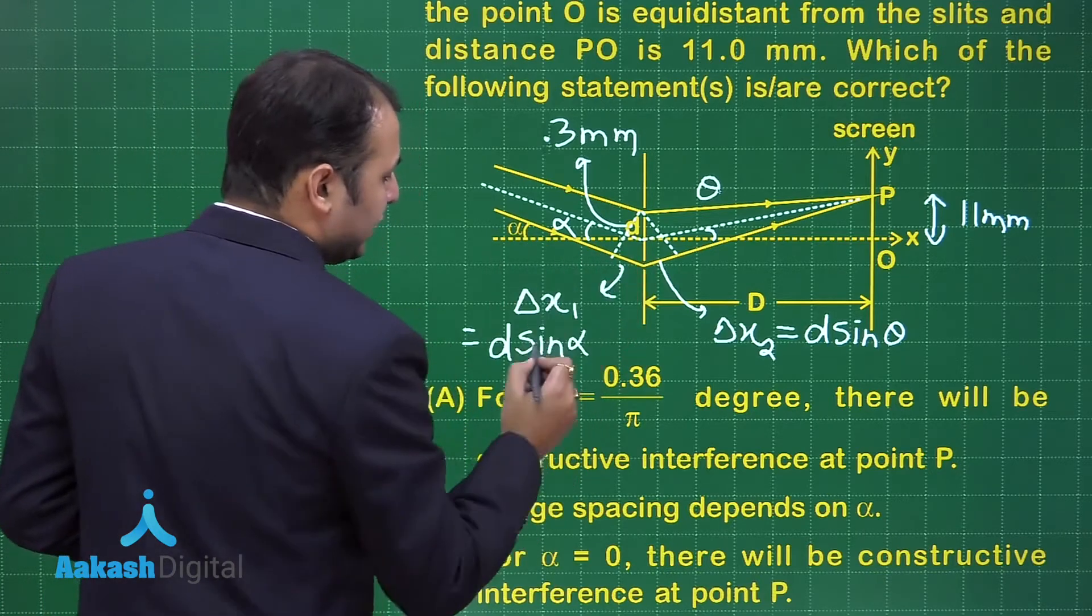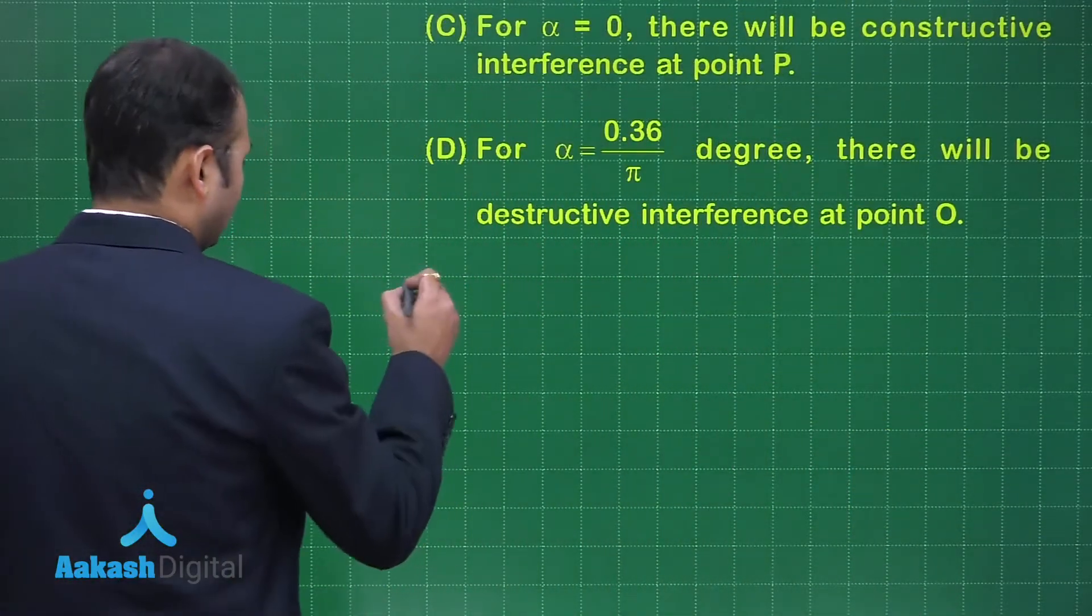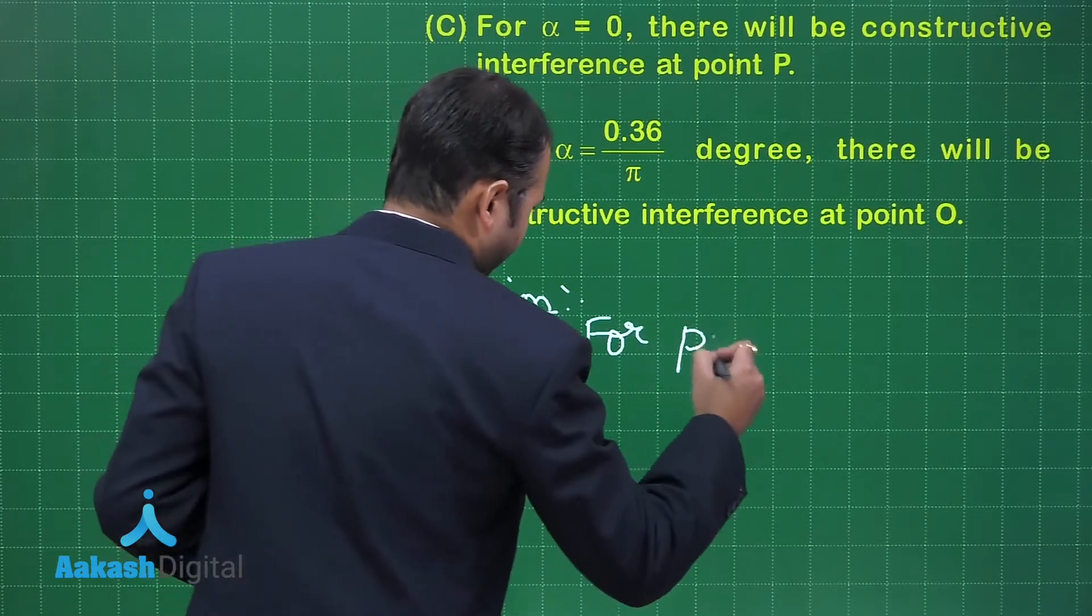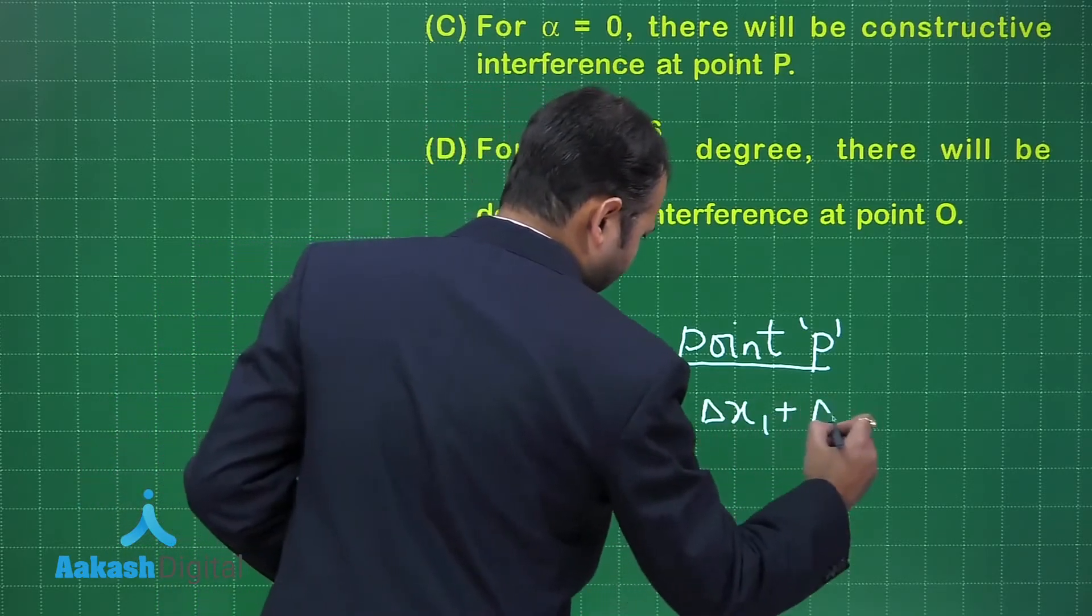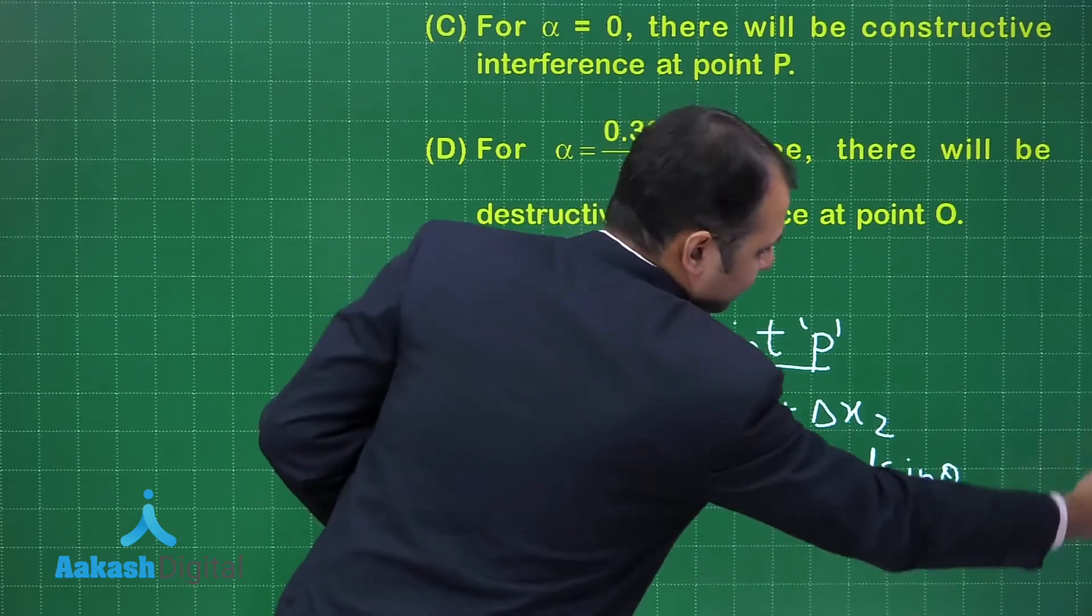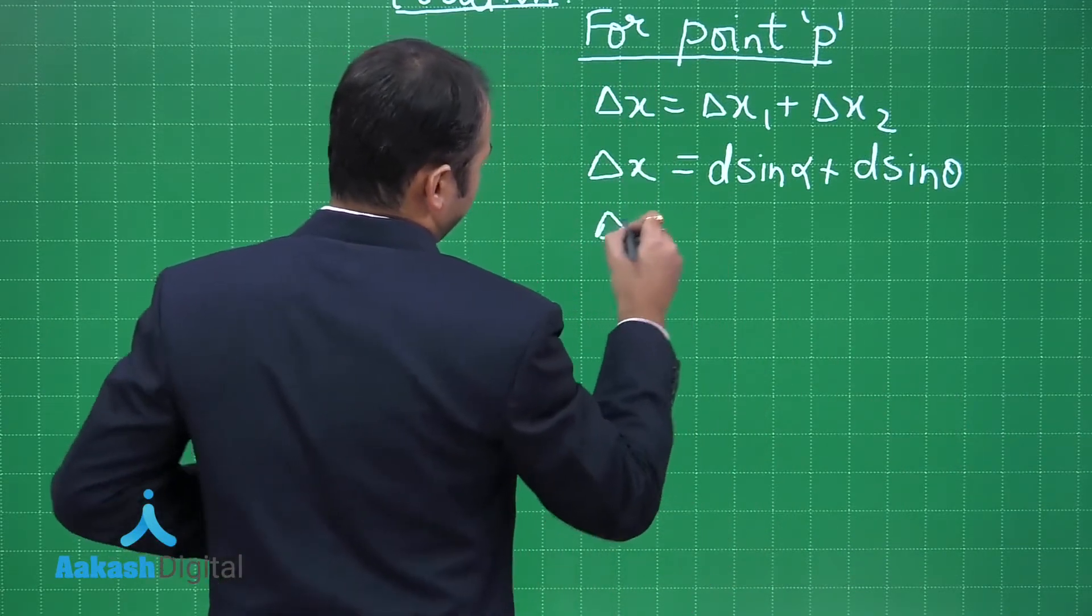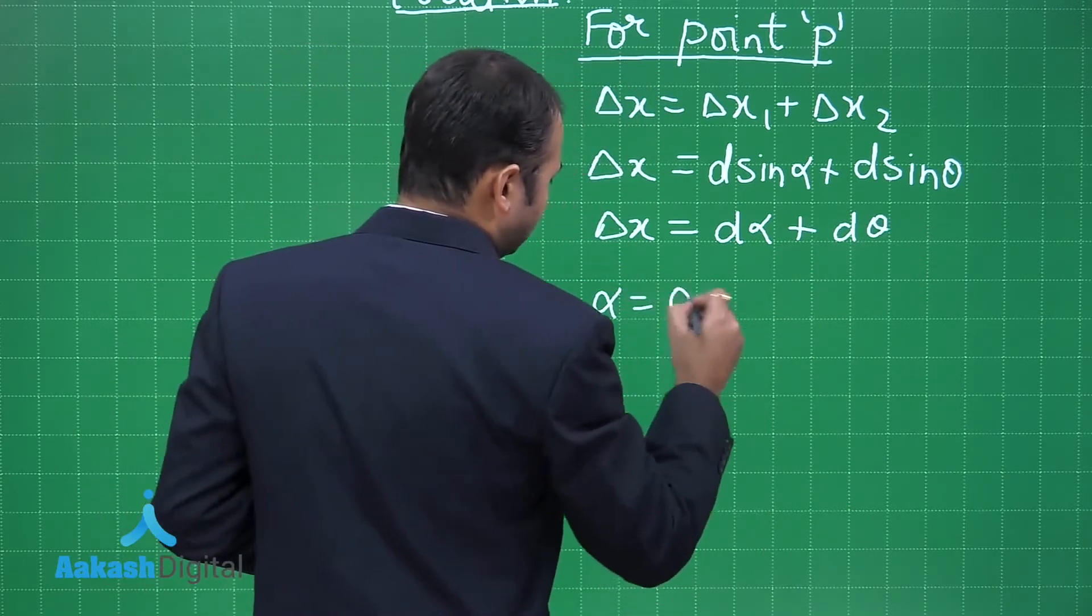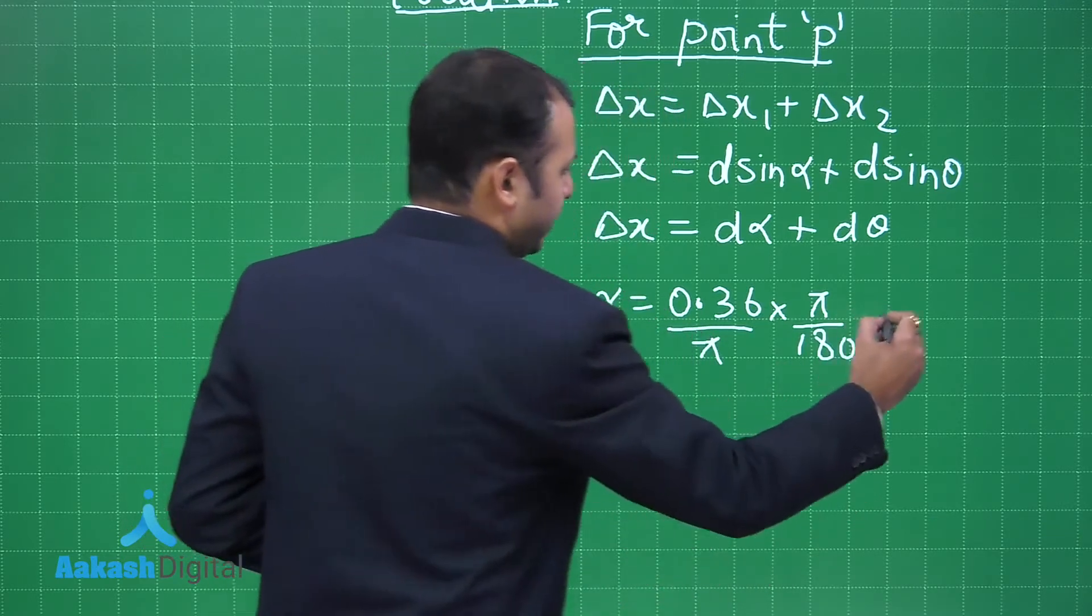When you understand that the light rays are coming like this and then move like this, the angles we are talking about is this as alpha and this as theta. The path difference between the two light rays would be the sum of delta x1 and delta x2. Putting the values down for point P, path difference will be equal to delta x1 plus delta x2, that is d sin alpha plus d sin theta. Since the angles are very small, I can easily write delta x equals d alpha plus d theta.